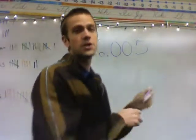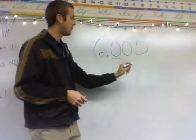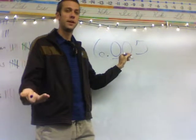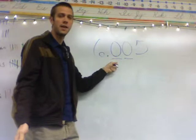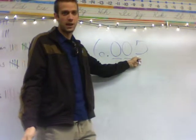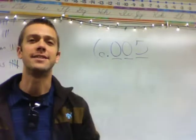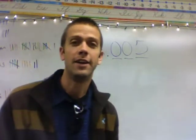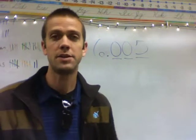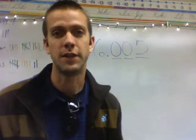This first column, remember, is the tenths. We've already talked about this one being the hundredths. So what do you think is next? Follow the pattern: tenths, hundredths, thousandths — the '-dths' at the end. So this number, to read it — naming decimal numbers — is 'six and five thousandths.'